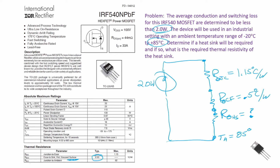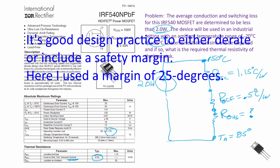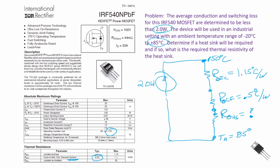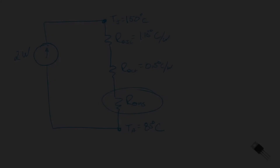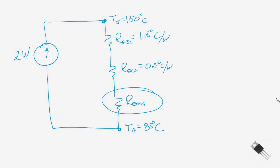We know what our maximum junction temperature is. I'm going to not take 175 degrees centigrade; I'm going to reduce that to 150 degrees centigrade. We now have everything we need to solve this problem. We can find what our thermal resistance for the heat sink has to be. The difference between the junction temperature and the ambient, divided by the power dissipated, has to equal the total thermal resistance from the junction to the ambient, which includes these three components.